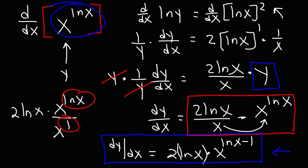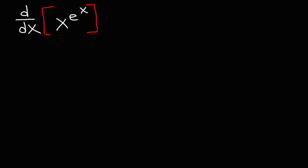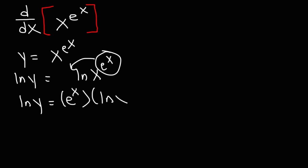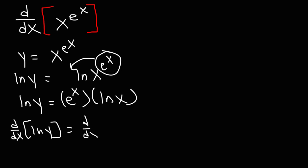That's how you find the derivative of x raised to the natural log of x. For practice, let's try another example: find the derivative of x raised to the e to the x. So let's set it equal to y first: y is equal to x raised to the e^x. Now we're going to take the natural log of both sides, so ln y is equal to ln(x^(e^x)). Then we move the exponent to the front: ln y is equal to e^x times ln x. Now we take the derivative of both sides with respect to x.